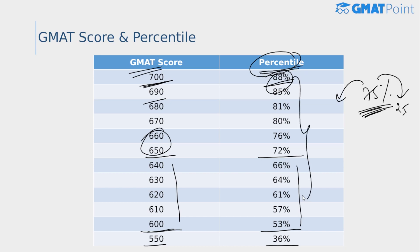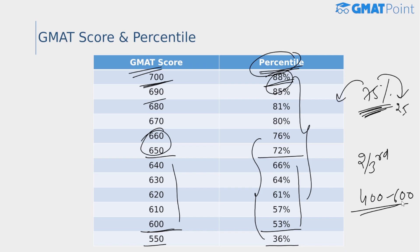According to information on the official website, around two-thirds of test takers score between 400 and 600 on the GMAT.